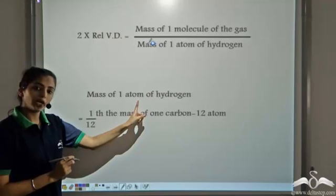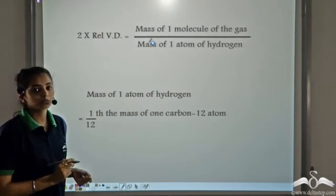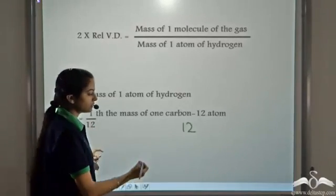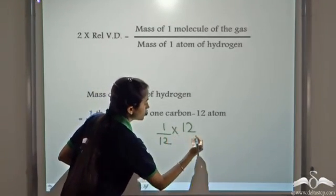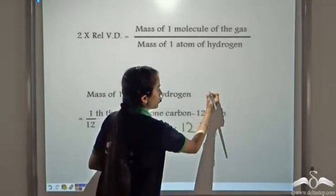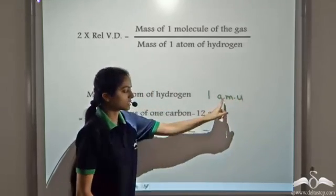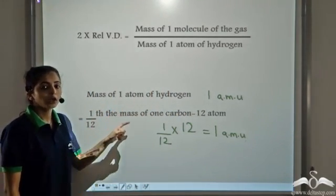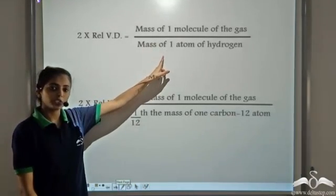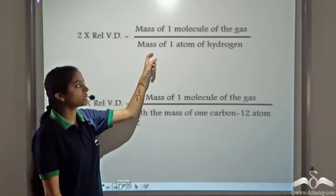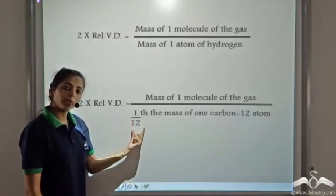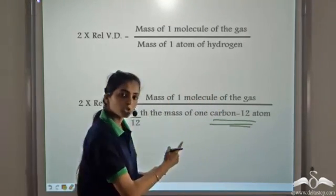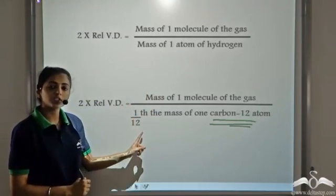If you remember, the mass of one atom of hydrogen is equal to one-twelfth the mass of one atom of carbon-12, because the mass of one atom of carbon-12 is 12, and one-twelfth of 12 is 1 — which equals the atomic mass of hydrogen in atomic mass units. So in the equation, we can replace the denominator — mass of one atom of hydrogen — by one-twelfth the mass of one atom of carbon-12, since carbon-12 is always taken as the reference.